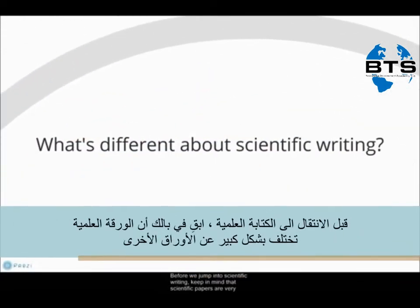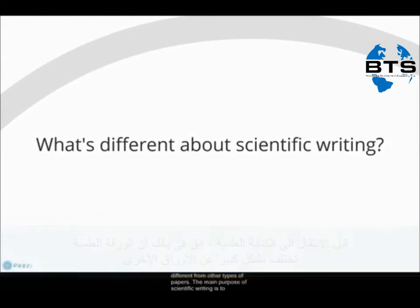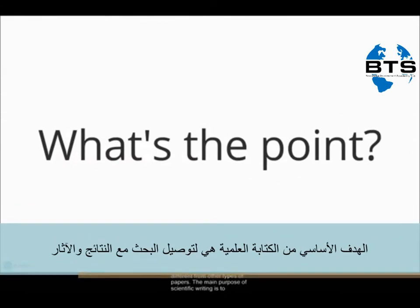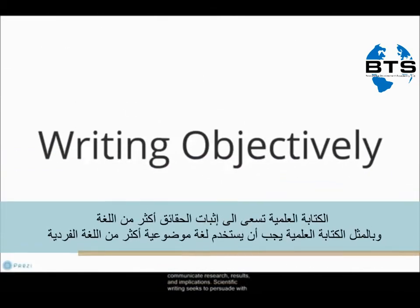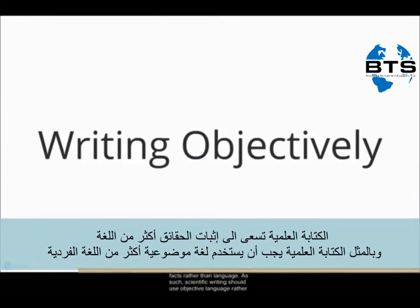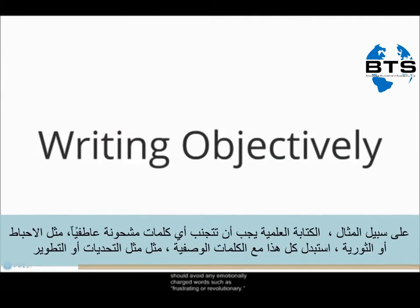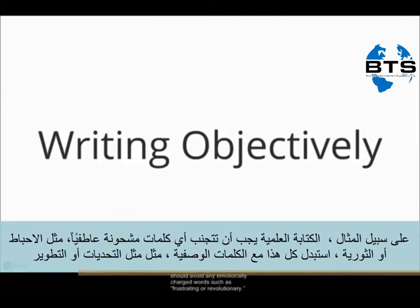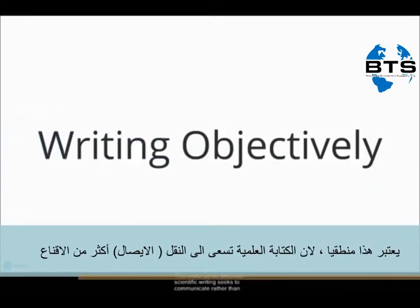Keep in mind that scientific papers are very different from other types of papers. The main purpose of scientific writing is to communicate research, results, and implications. Scientific writing seeks to persuade with facts rather than language. As such, scientific writing should use objective language rather than subjective language. For example, avoid emotionally charged words such as 'frustrating' or 'revolutionary.' Substitute these with descriptive words such as 'challenging' or 'advancement.' This makes sense because scientific writing seeks to communicate rather than persuade.